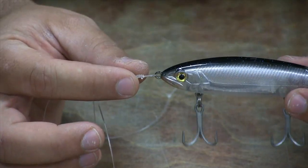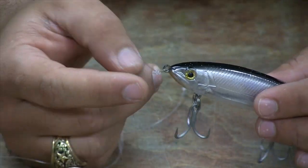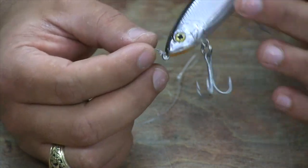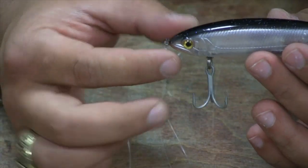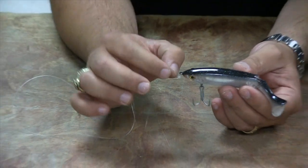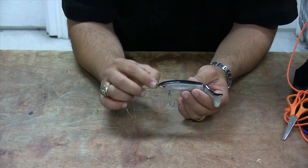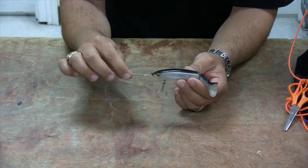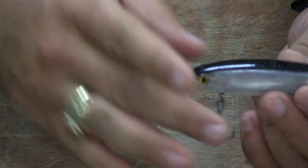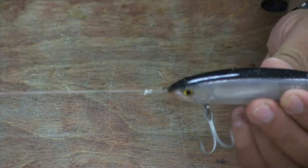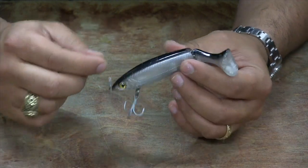Why do you want a loop knot on a topwater like this? What this loop knot does is it helps enhance and preserve the action of the lure. If you were to tie a tight clinch knot directly to this eyelet, what ends up happening, the stiffness of the mono or the fluorocarbon that you're using ends up wanting to kill the action or mute the action of your bait.